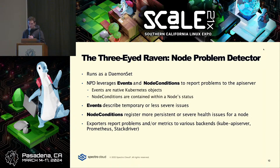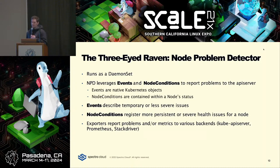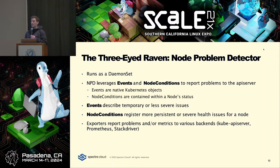Events are for less severe or temporary issues. Node conditions are interesting because they tie into the synchronicity of these three projects: if you set node conditions on nodes, that can inform Descheduler to take workload off those nodes, and then Cluster Autoscaler can kick in and decommission the node completely.